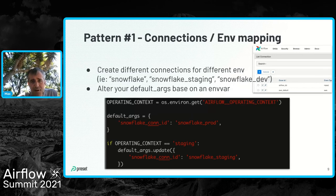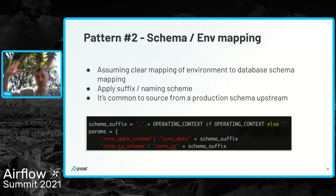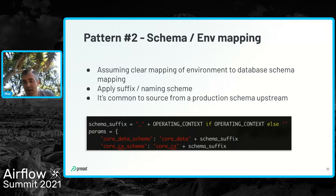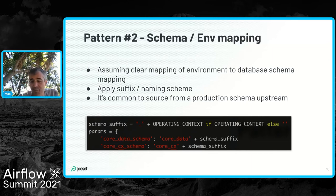Another pattern is to keep the same database connection but point to different schemas. If you have a Presto cluster or a Postgres database, you might want to use a single connection and single data warehouse but say — depending on whether I'm in dev or staging — I'm going to point to different schemas. Here we're reading the operating context, creating a schema suffix, and altering parameters based on context, so somewhere there's SQL that prefixes to point to the right schema depending on your environment.